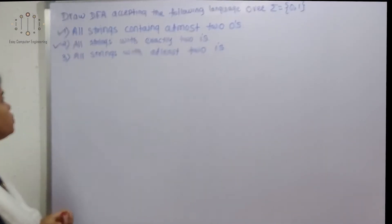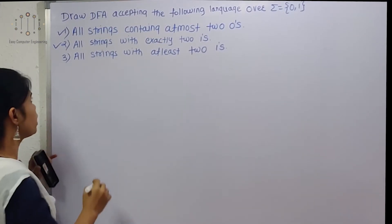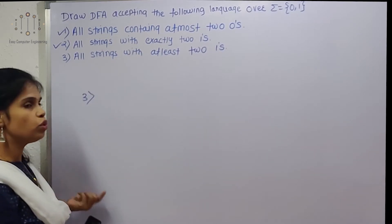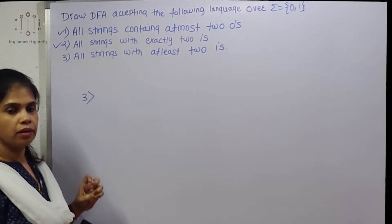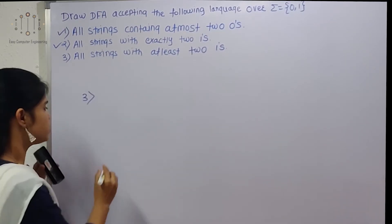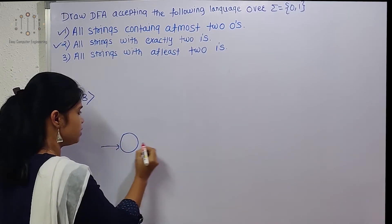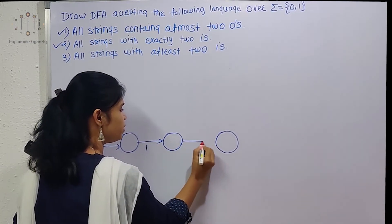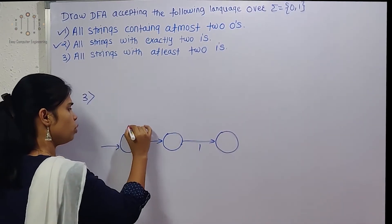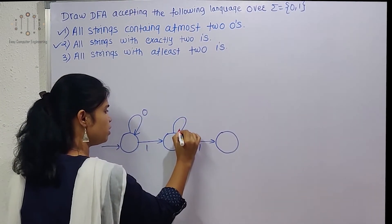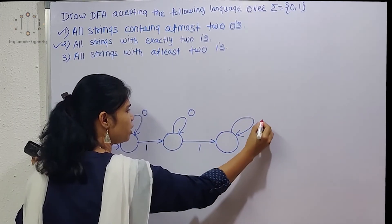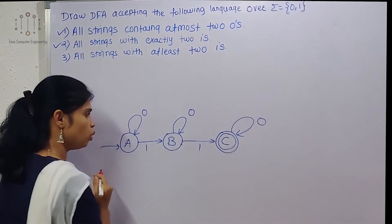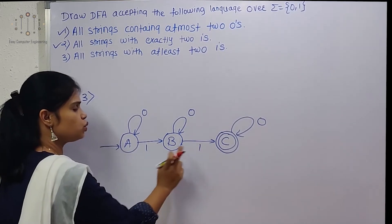The third example is: all strings with at least two 1s. The difference between 'at most', 'exactly', and 'at least' is important. For at least two 1s, we take an initial state A, one more state B, and state C. We apply 0 self-loops on every state, and state C is our final state.